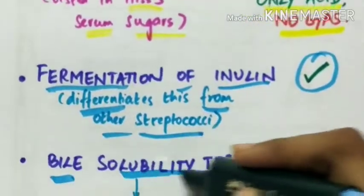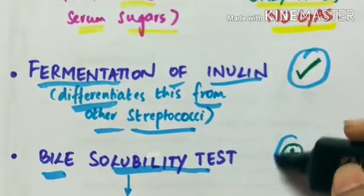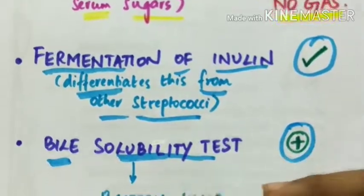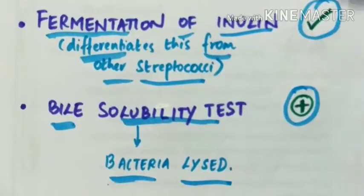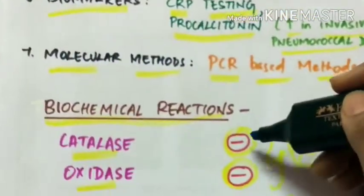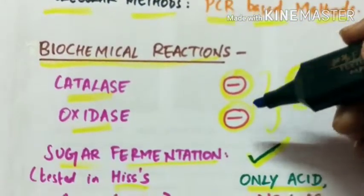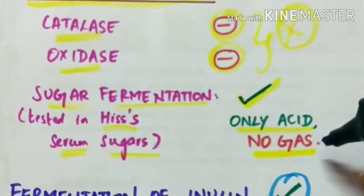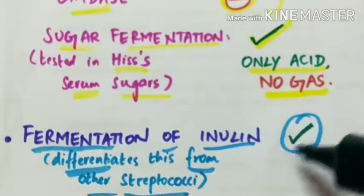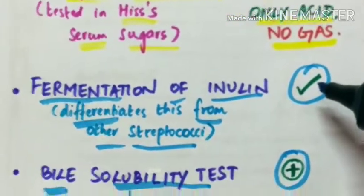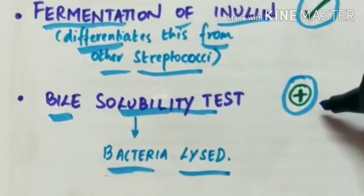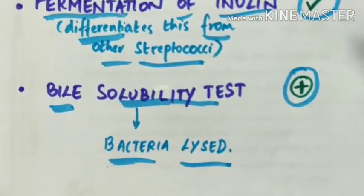Next is bile solubility test. This is positive, that is the bacteria are lysed. So Streptococcus pneumoniae is catalase and oxidase negative. All sugars are fermented but there is no gas production. And it shows fermentation of inulin. Bile solubility is positive and it shows optochin sensitivity.